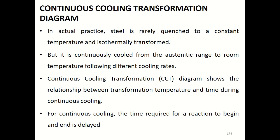In the time-temperature transformation diagram, we discussed the formation of martensite based on quenching or cooling to a constant temperature. However, in actual metallurgical practice, steel is rarely quenched to a constant temperature or isothermally transformed. Instead, it is continuously cooled from the austenitic range to room temperature following different cooling rates.